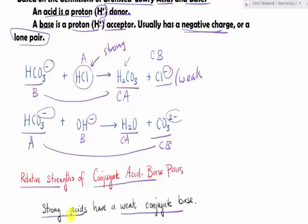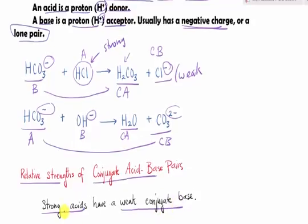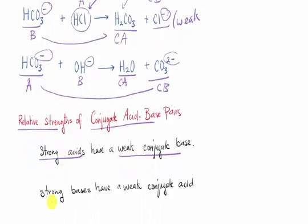Since the strong acid has a weak conjugate base, what happens when we have a strong conjugate base? Of course we have a weak acid. It's vice versa. For the base, it's the same thing. When you have a strong base, you have a weak conjugate acid. And vice versa, if we have a strong conjugate acid, we would have a weak base.